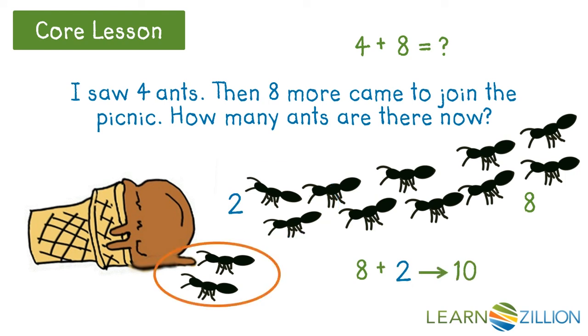Then there's 2 more ants. 10 plus 2 equals 12. 4 plus 8 equals 12.